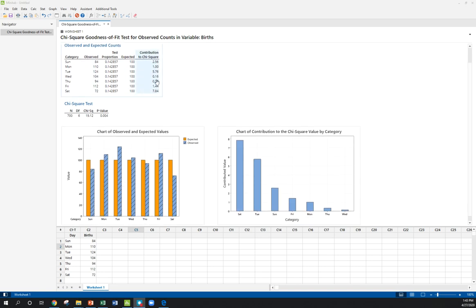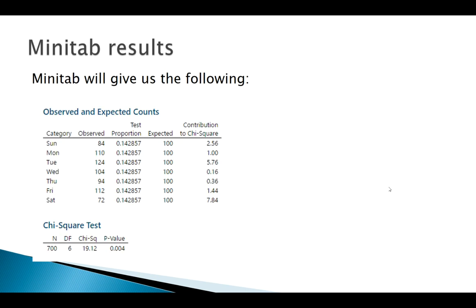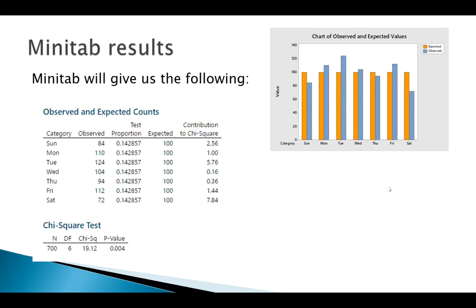Here's the default output. It does all the math that we just did, finds our test statistic that agrees with us, finds a small p-value. Nice thing about Minitab is it gives us a couple of these nice little graphs here. Let's look at these graphs more in detail.